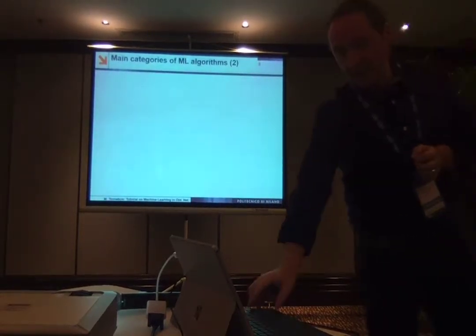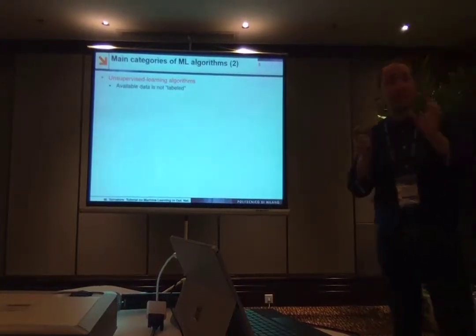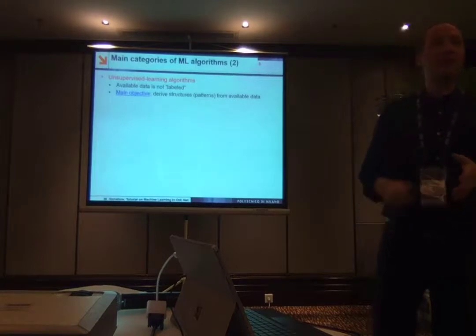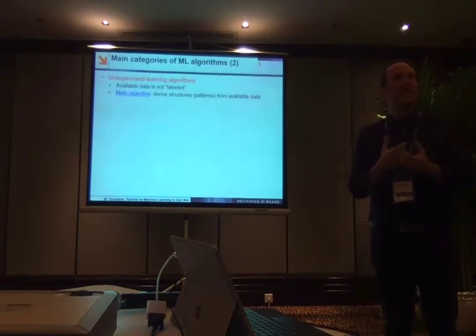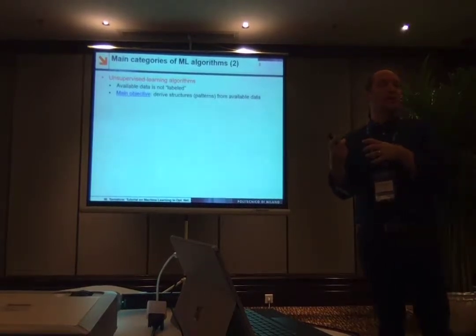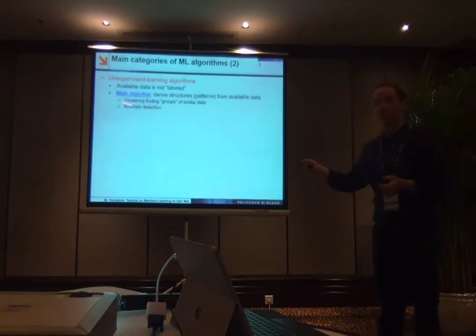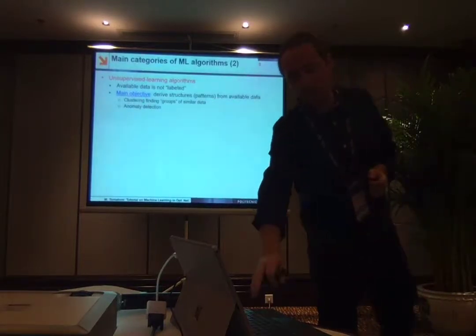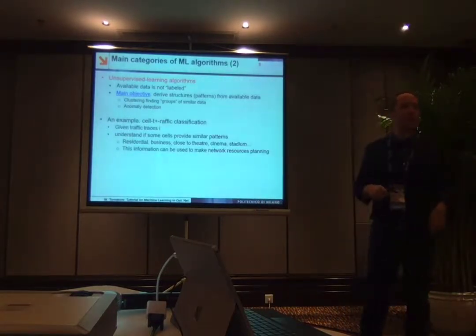Unsupervised learning is the second category. In unsupervised learning, you don't have a relation between input and output. You have a set of data, and you try to identify which data points are similar to each other and which are different. What you do is basically either clustering — aggregating data that are similar to each other — or anomaly detection, identifying data points which are outliers with respect to your categories.